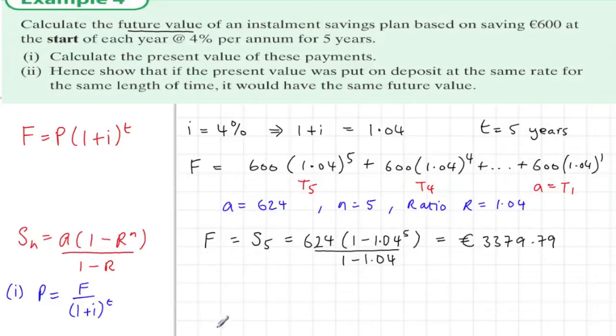But if we think about this, the first 600 euros is needed straight away and it's just 600 euros that we have now, so that's just worth 600 euros. The second 600 euros we won't need that for a year, so that'll have been earning interest for a year.